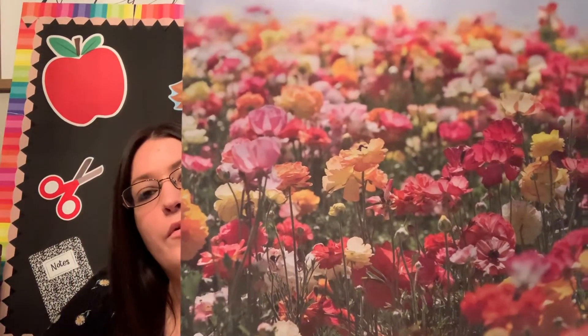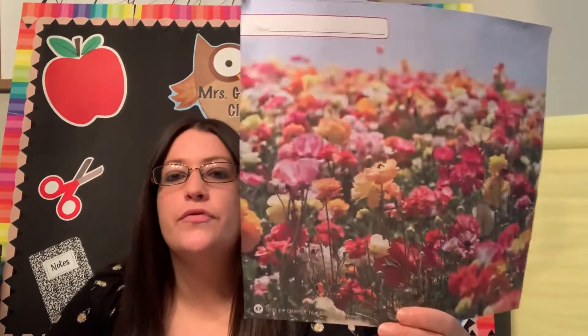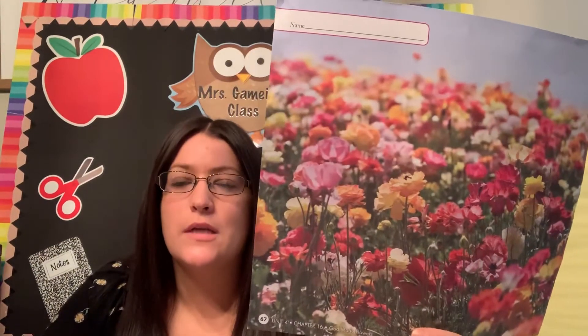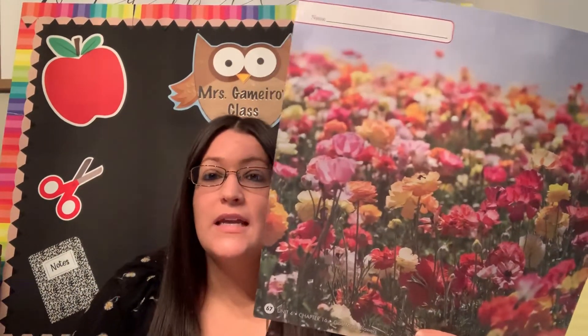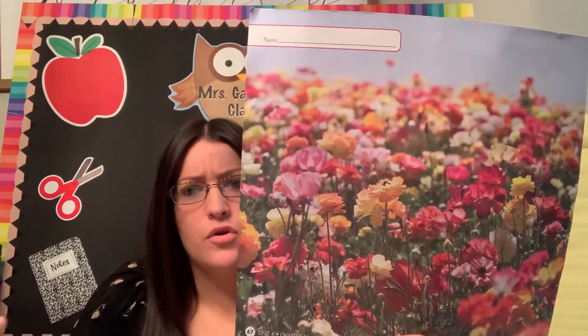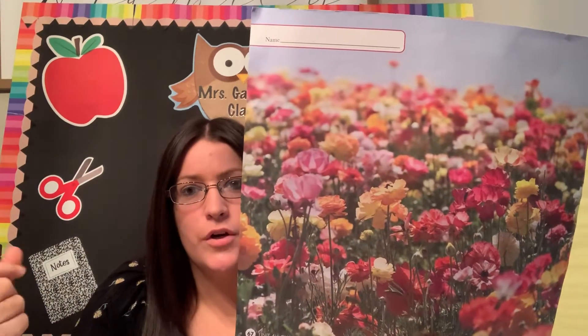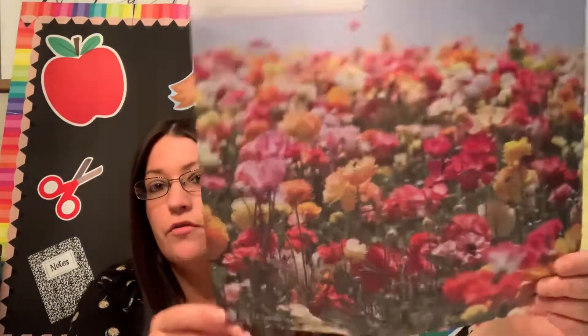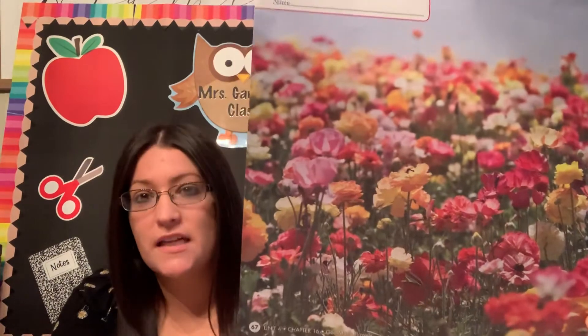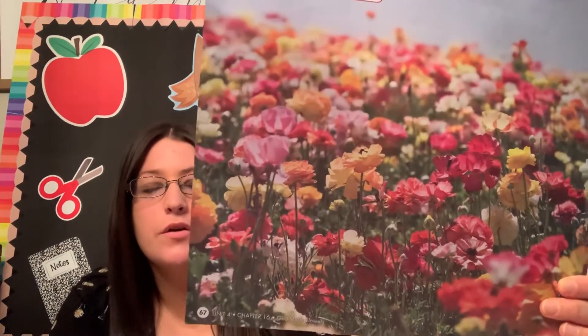I also want you to think about what flowers need to grow. What do flowers need outside to grow? They need nice, rich soil — the dirt. They need dirt to grow in. They need sunlight. They need water. Water is very important. Water, sun, and soil are the main things flowers need to grow.